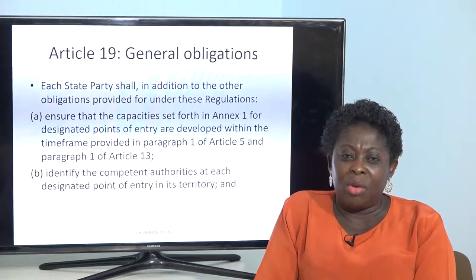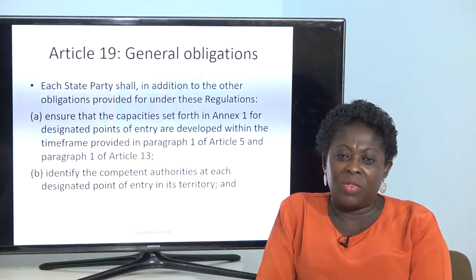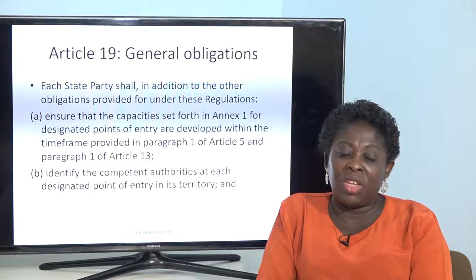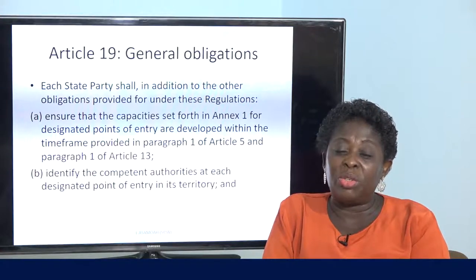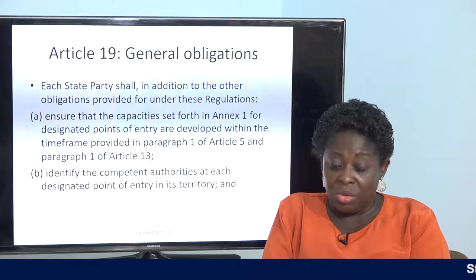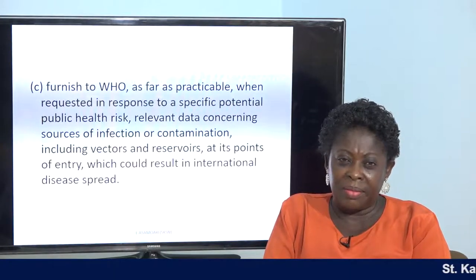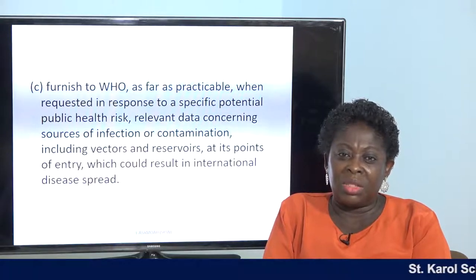We all know the time frame. State parties are also supposed to identify the competent authorities at each designated point of entry in their territory. For example, Ghana is supposed to let the WHO know which of the ports they have earmarked or identified to carry out the capacities that have been set out in Annex 1 of the regulation.